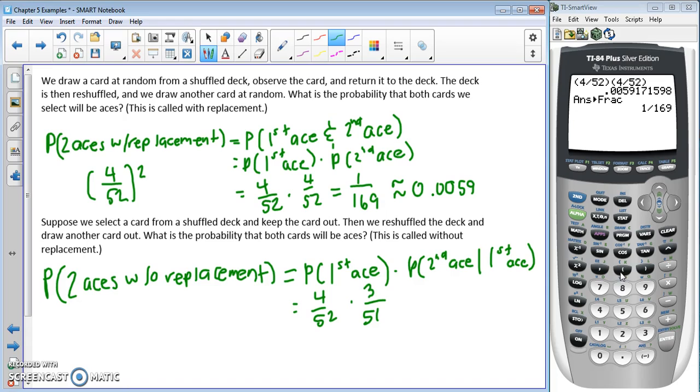Let's multiply these together on a calculator. 4 divided by 52, close the parenthesis for our fraction, open another parenthesis for a new fraction, 3 divided by 51, close the parenthesis.